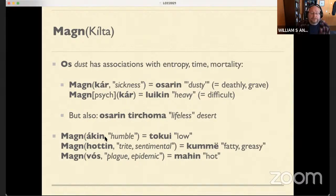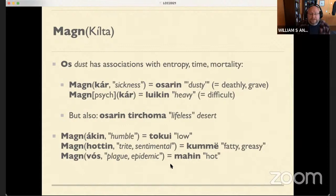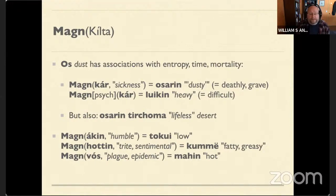The same 'dust' word I came up with for 'deathly ill' can also refer to a desert that just doesn't have much life in it. Acting humble — really humble would be 'lowly humble.' Trite or sentimental uses 'greasy' for intensity. And for plague, I chose 'machin' just because I already have 'machin' representing sickness and coolness representing recovery — so I did that by metonymy.